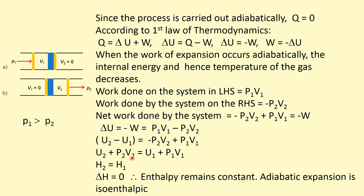Rearranging, U2 plus P2V2 equals U1 plus P1V1. Since U plus PV is known as enthalpy, this gives H2 equals H1. Therefore, delta H equals zero — meaning enthalpy remains constant, or adiabatic expansion in the Joule-Thomson process is isoenthalpic.